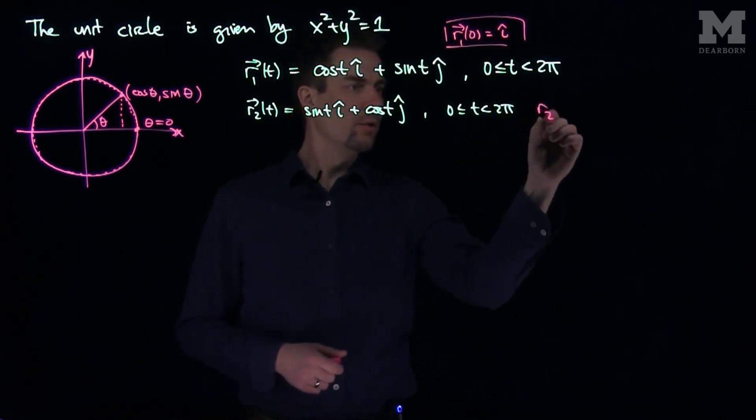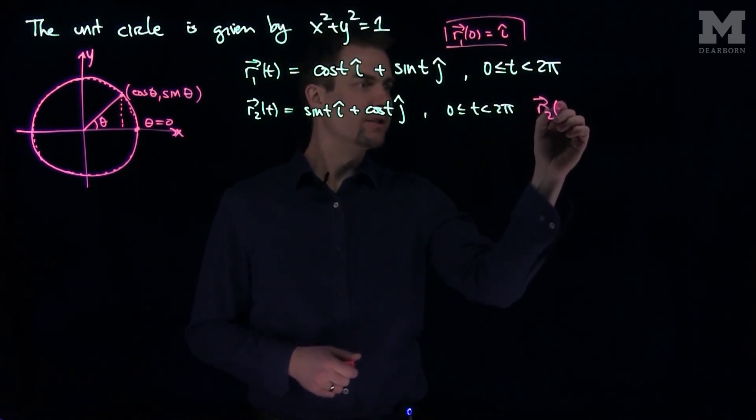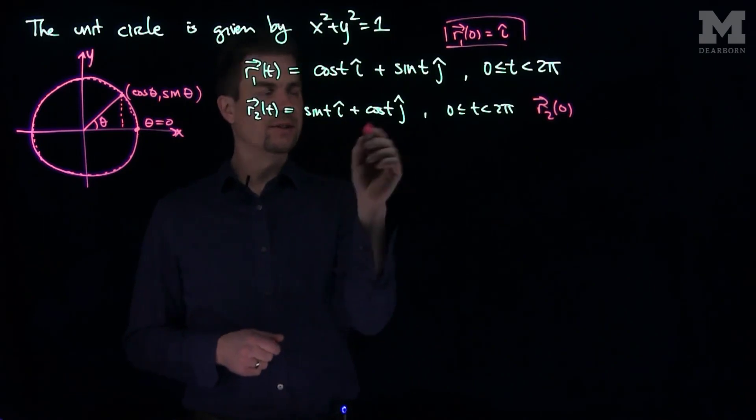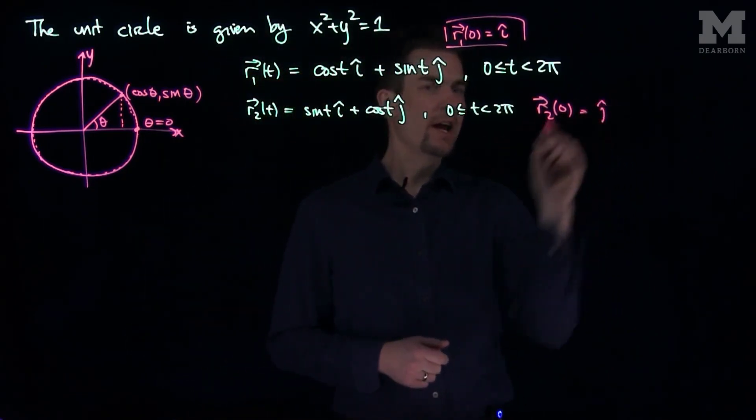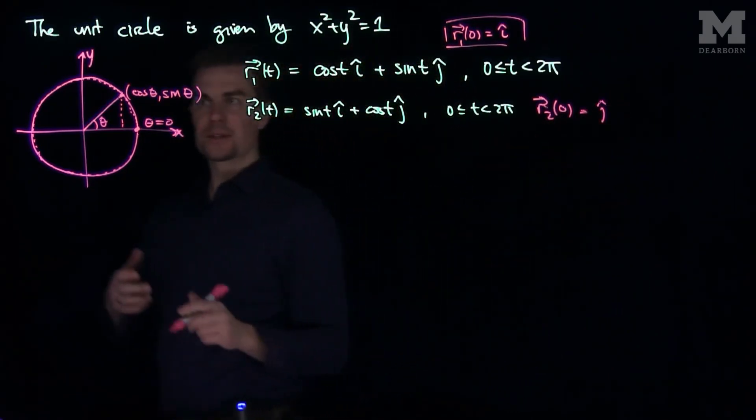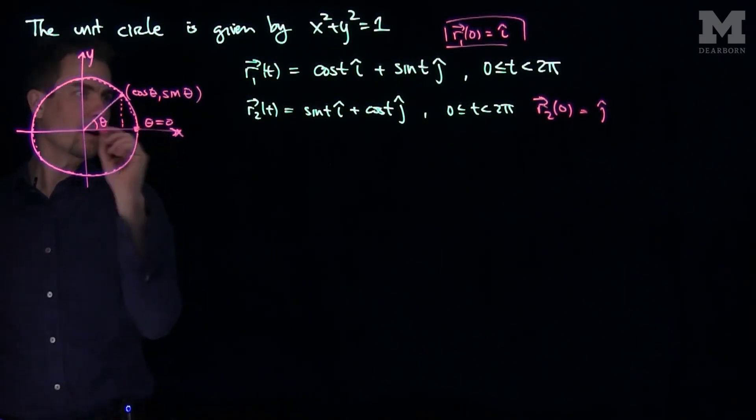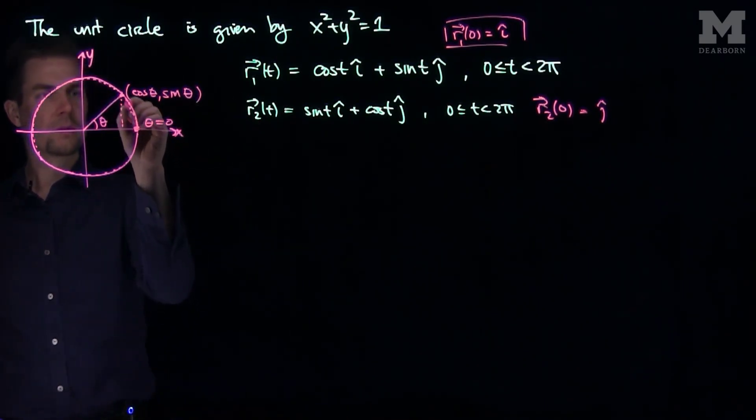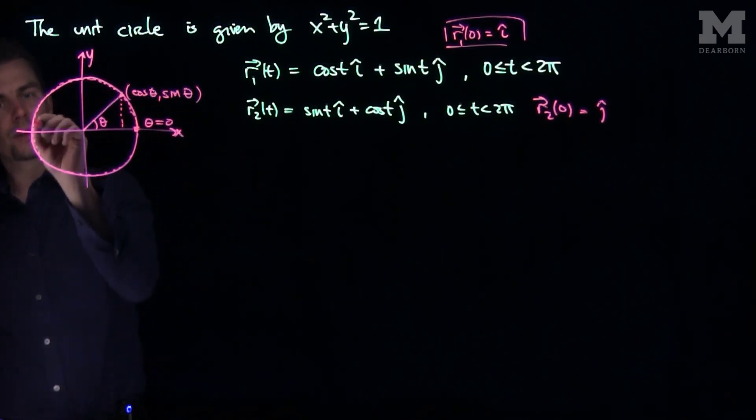If we look at r2(0), well now I'll have a 0 and a 1, so I'll get to j hat. So what happens is that for the first curve, I start over here for r1, I start at 0 and trace around the unit circle like this.